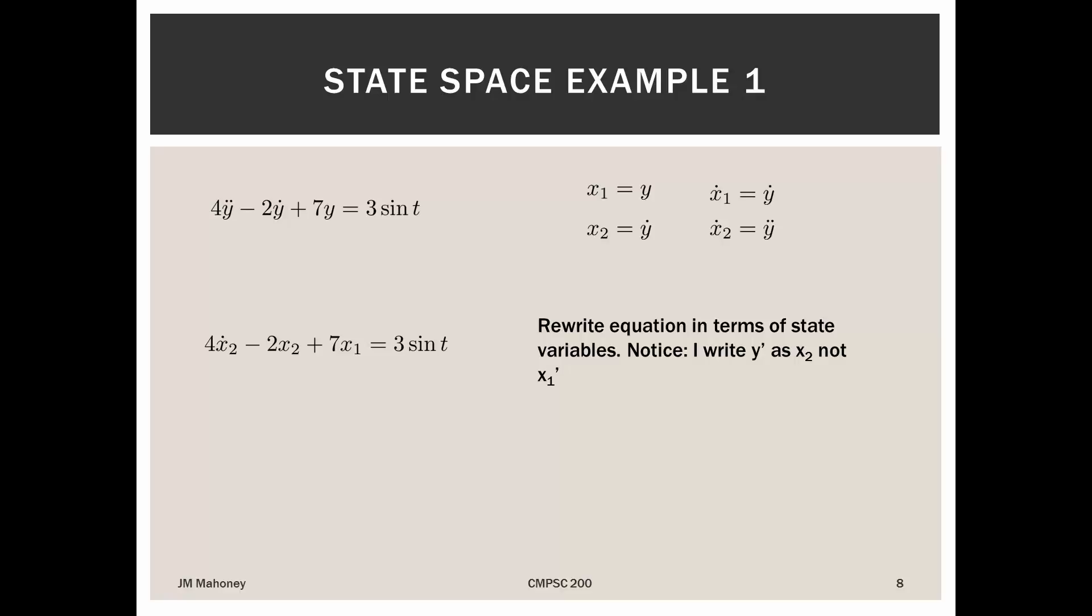Minus 2 times y dot. Y dot, as I just said, I could actually express two different ways. I can express it as x2, or I can also express it as x1 dot. My preference always must be to express it as a non-derivative term. So instead of expressing it as x1 dot, I'm going to express it as x2. Plus 7 times y, looking at that table in the upper right, the only way I can write y is by writing x1. And then equals 3 sine of t, that just remains the same. So again, all my dependent variables and their derivatives, I'm rewriting using what we call the state variables.